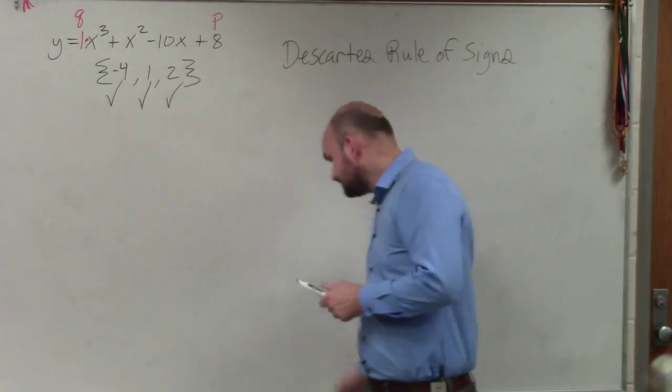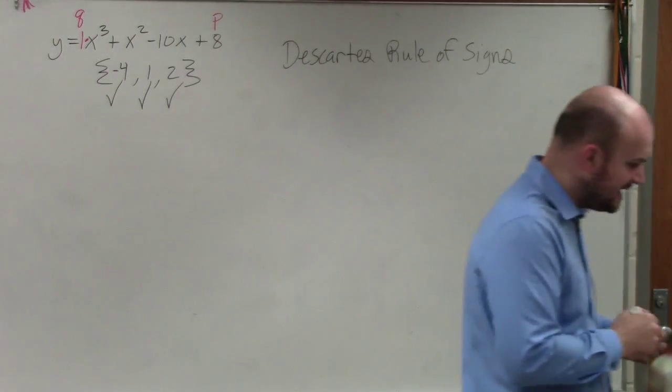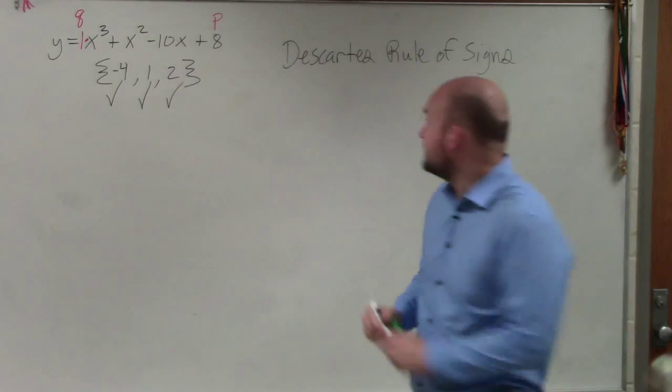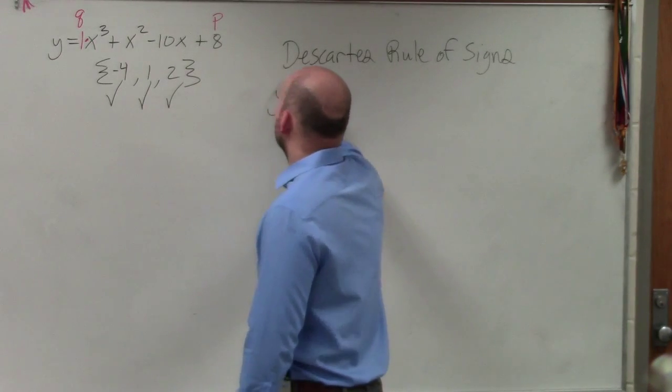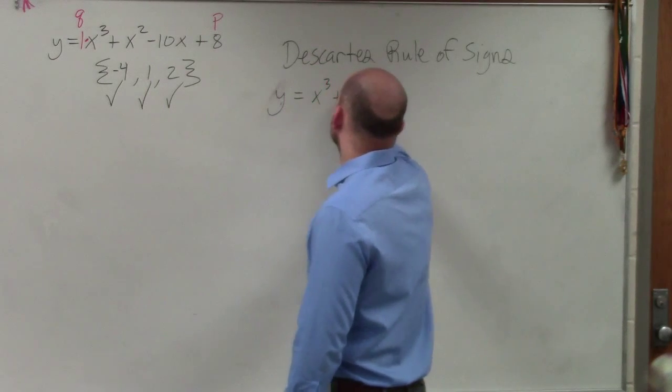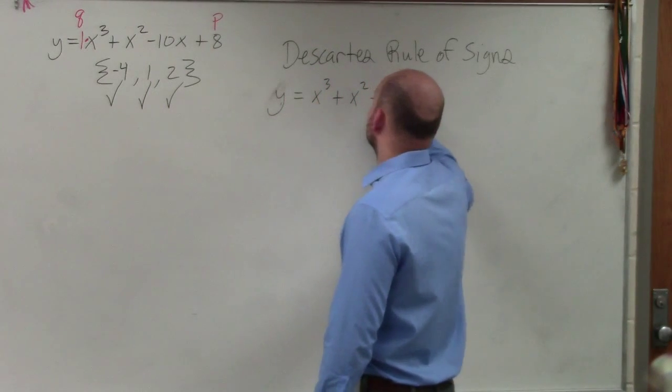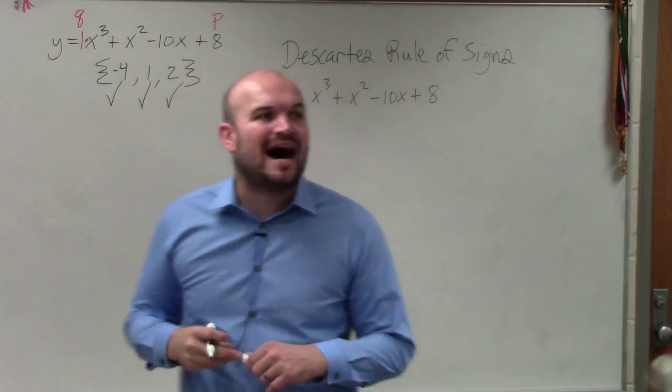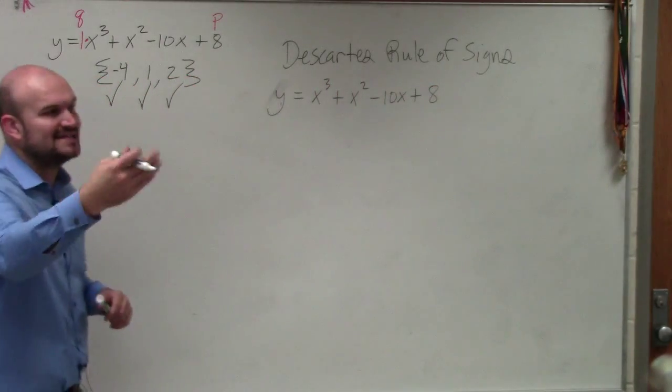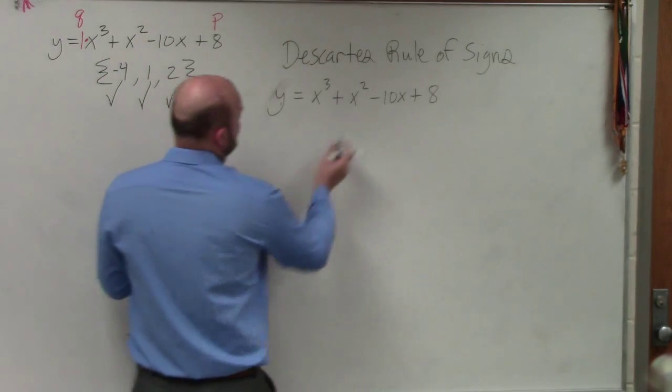So what you're going to do for Descartes' rule of signs is you're going to take f(x), and you're going to find all the sign changes between each and every term. The number of sign changes is the number of positive real zeros minus an even number. So let's count how many sign changes we have.